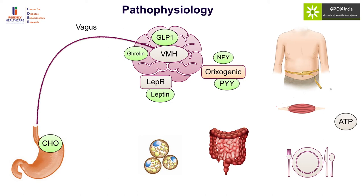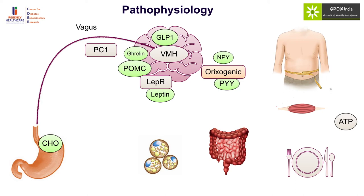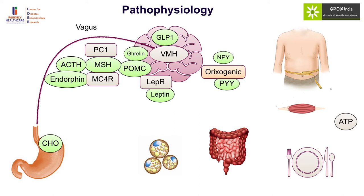The hypothalamus has an orexigenic pathway working via neuropeptide Y, which increases appetite. It also has an anorexic pathway — acting through pro-opio-melanocortin (POMC) — which is converted by pro-convertase into three parts: the opio component (endorphin), the melano component (MSH or melanocyte-stimulating hormone), and ACTH. The MSH acts on the MC4 receptor to induce the anorexic signal.